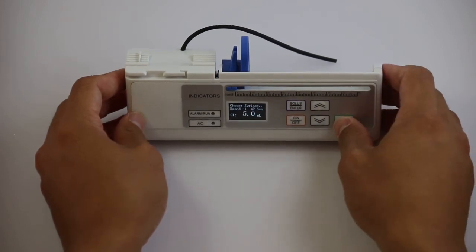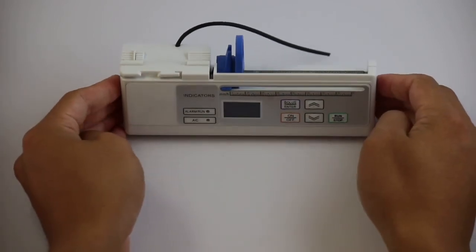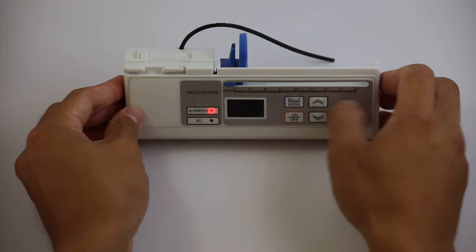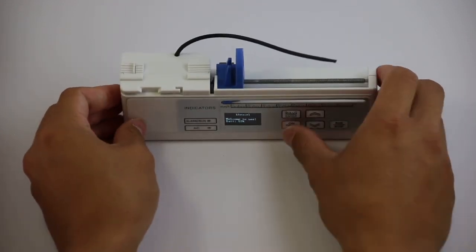Once you have calibrated the syringes and modified the settings to your preference, you are now ready to use your pump. Turn the pump off to exit settings mode and turn it back on again to begin using your pump. Check out our next video on how to use the KM1001 micro syringe pump.